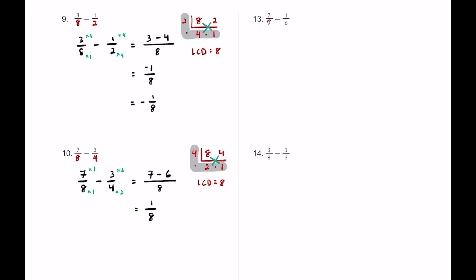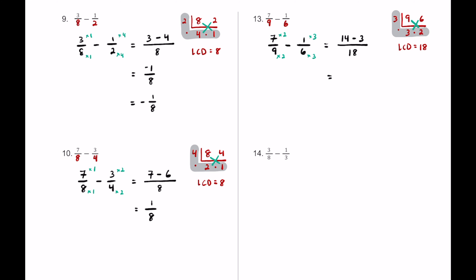For number thirteen we have seven-ninths minus one-sixth. Nine and six aren't both even but three is a factor of both: three times three is nine, three times two is six. Three times three is nine, nine times two is eighteen — so the LCD is eighteen. Seven times two is fourteen, one times three is three, so fourteen minus three equals eleven — giving eleven-eighteenths, which can't be simplified since eleven is prime.